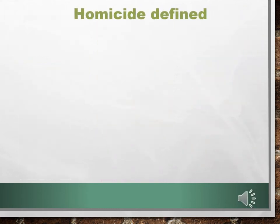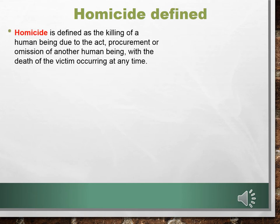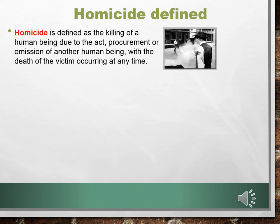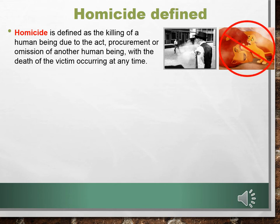Homicide is probably the most misused and misunderstood term in all of criminal law. Homicide is defined as the killing of a human being due to the act, procurement, or omission of another human being, with the death of the victim occurring at any time. When Gary Cooper kills another cowboy in High Noon, that's one human being killing another — we have a homicide. When Scar kills Mustafa, that's not a homicide — that's just the law of the jungle. And no matter when the person dies, whether immediately or ten years from now, if you're the cause of that person's death, you committed a homicide.